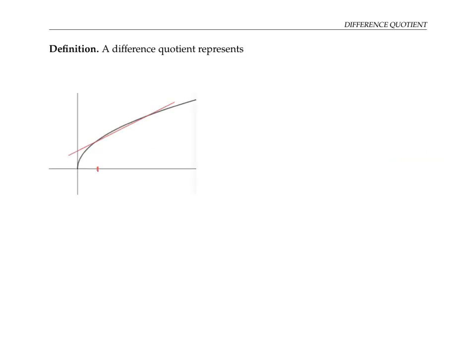Instead of calling these two locations on the x axis a and b, this time I'm going to call the first location just x, and the second location x plus h. The idea is that h represents the horizontal distance between these two locations on the x axis. In this notation, this point on the graph of y equals f of x will have an x coordinate of x and a y coordinate of f of x. The second point will have an x coordinate of x plus h and a y coordinate of f of x plus h.